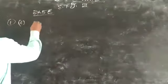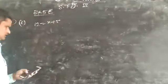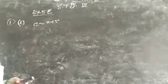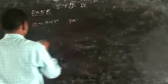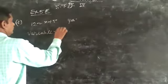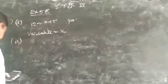Part (a): 12x = 2x plus 5. So, this is an equation with variable. The variable is x. Variable is equal to x.